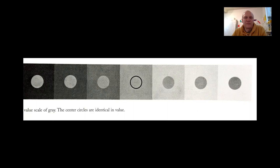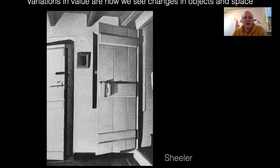Variations in value are how we see changes in objects in space — how we see volume in a picture like this. The variety of different grays allows us to see changes in depth and dimension. It also lets us see where the light source is. By the angle of the shading on the rafters and the doors, we can tell the light source is down and to the left.